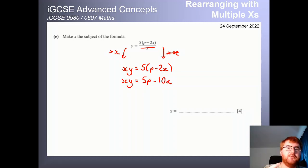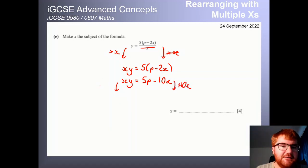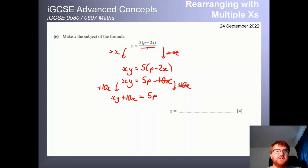And now that crucial step, which is to get all the x's on that left-hand side. The way we do this is the opposite of minusing 10x is adding 10x. So let's do that on both sides. That gives us then xy plus 10x. And because this cancels, we're left with just 5p, which is good.